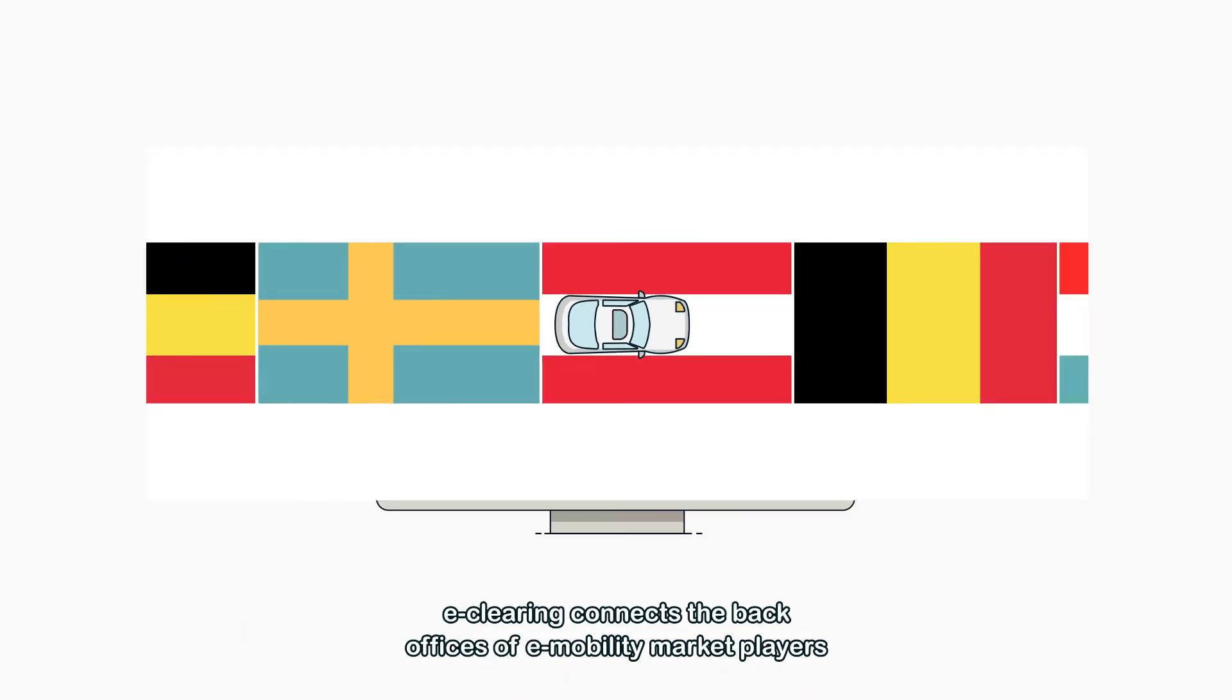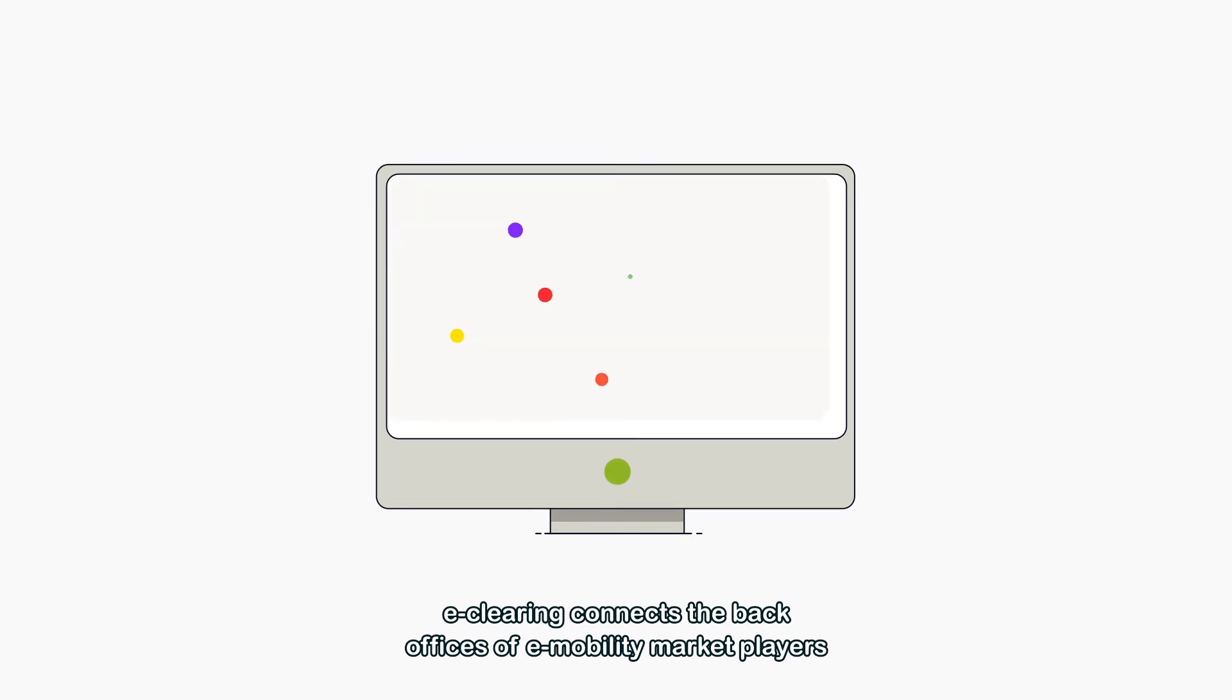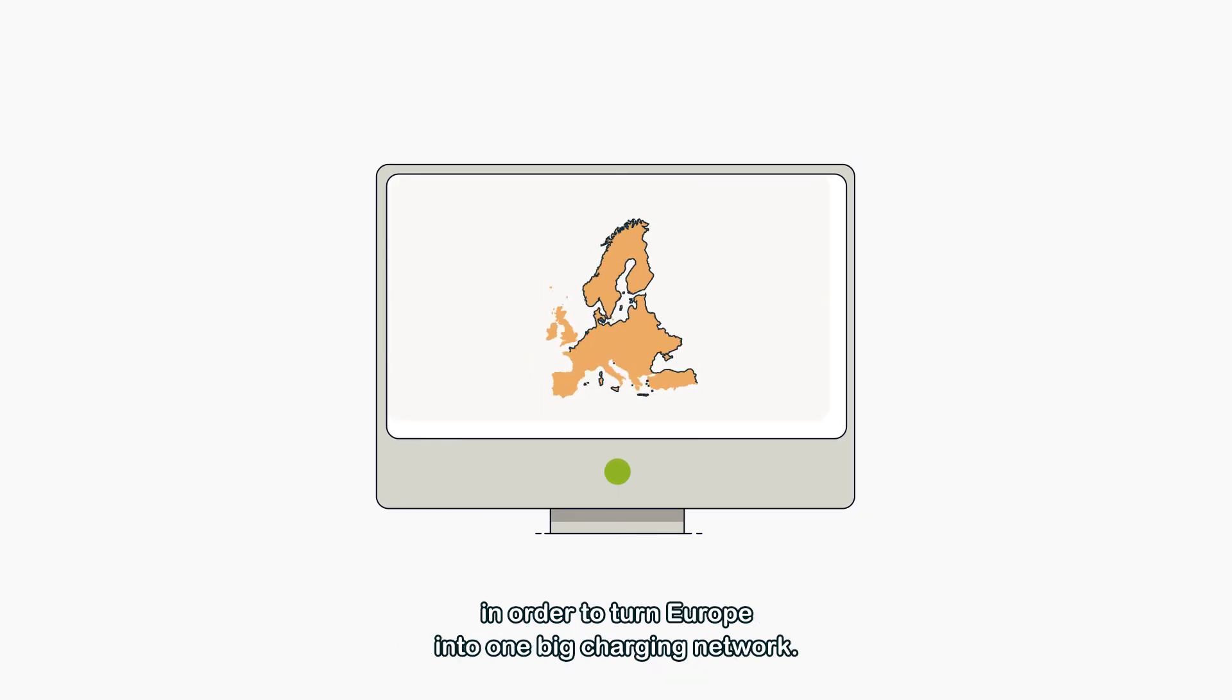eClearing connects the back offices of eMobility market players in order to turn Europe into one big charging network. It is the solution for borderless charging.